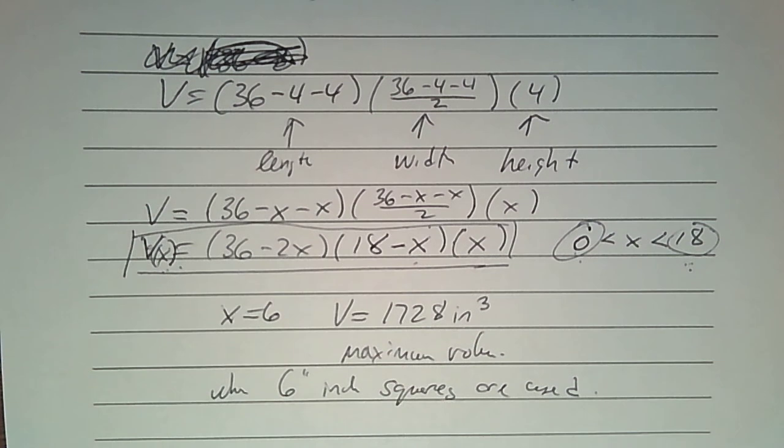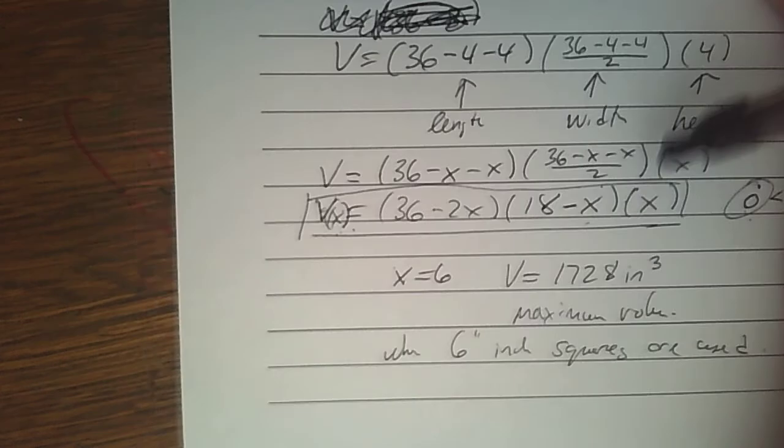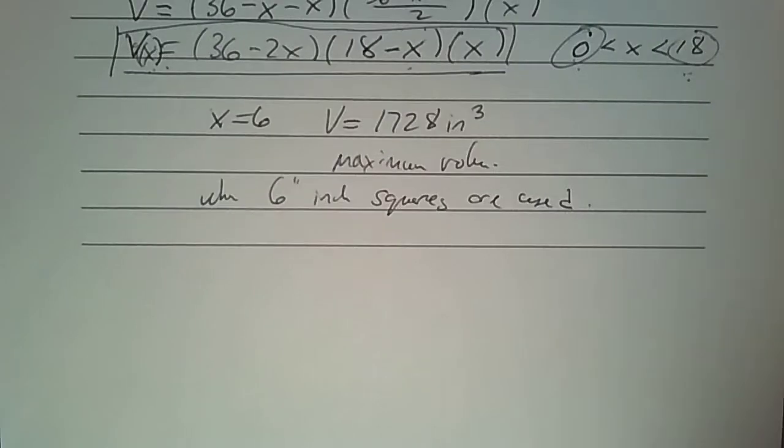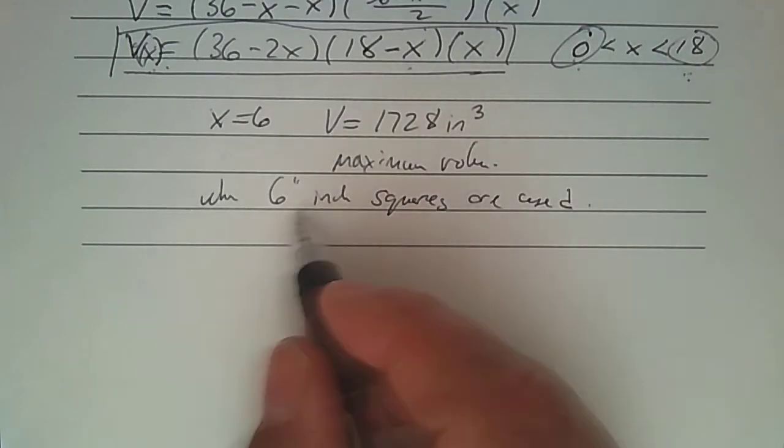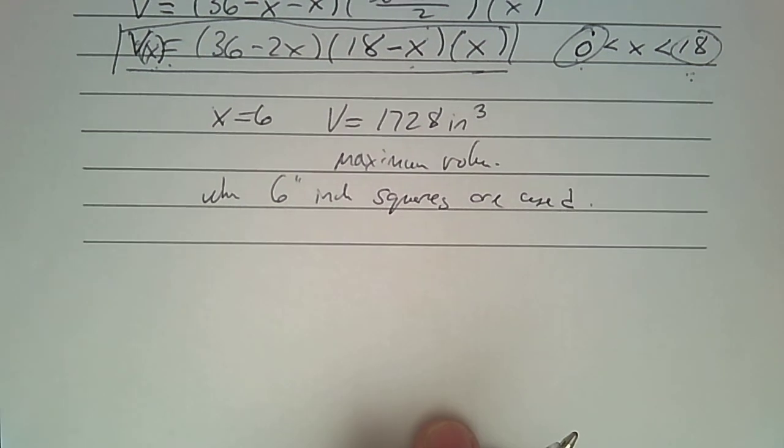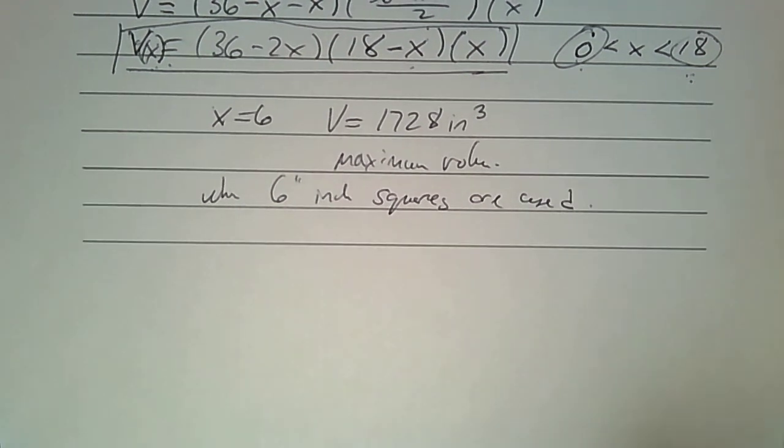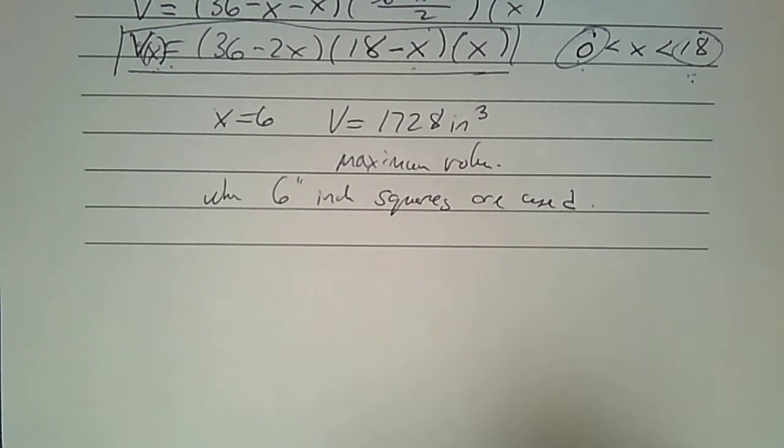Let's see if I can go back to the other screen. So there you go. What's the maximum volume? 1728 if you had 6-inch squares compared to the volume of the other one, which was 1568. Mr. G Math, over and out. Until next time, good job doing yours.